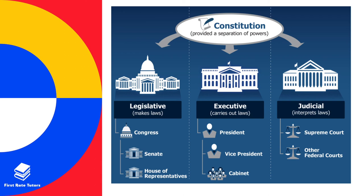As you can see in the diagram, the legislative branch is responsible for making laws, and beneath that is Congress, which contains the Senate and House of Representatives. The executive branch sits at the center — based in the White House — and includes the president, vice president, and the cabinet. On the far right is the judicial branch, which interprets laws passed by the legislative arm and includes the Supreme Court as well as other federal courts.